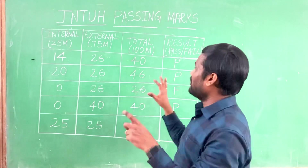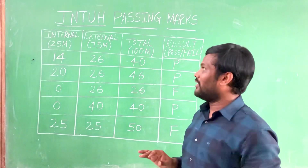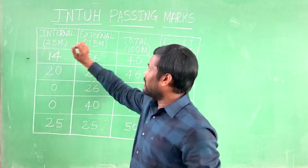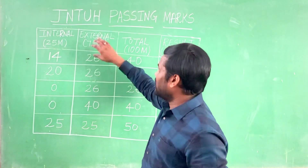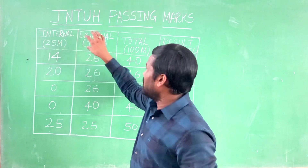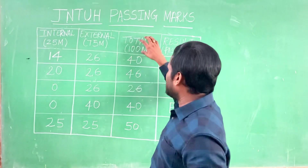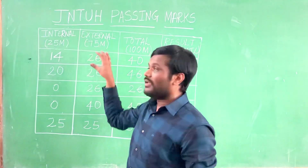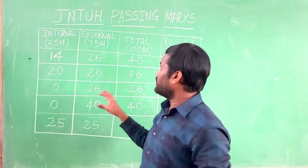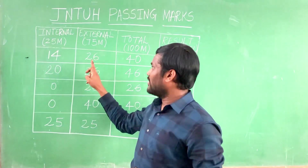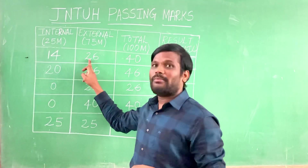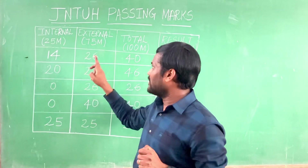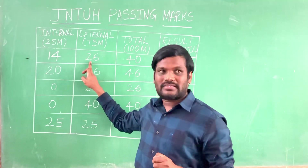I have made a tabular column so you understand very clearly. I have written the internal which is for 25 marks and the external which is for 75 marks. Summing up these two, the total is 100 marks. In order to qualify in any of the course, out of 75 marks, the minimum requirement is 35%. So for 75 marks, 35% is 26.